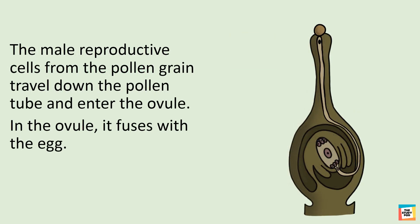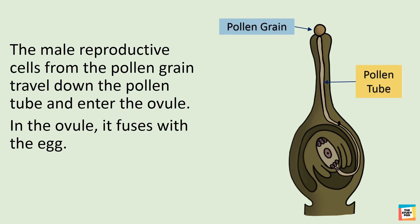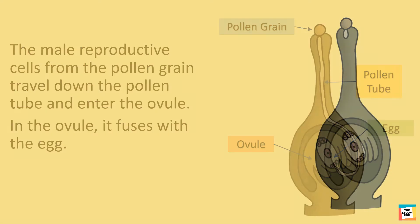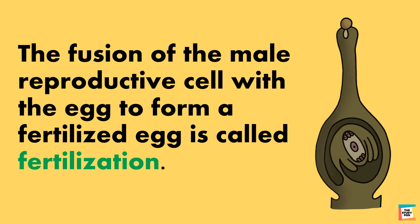The male reproductive cells from the pollen grain travel down the pollen tube and enter the ovule. In the ovule, it fuses with the egg. The fusion of the male reproductive cell with the egg to form a fertilized egg is called fertilization.